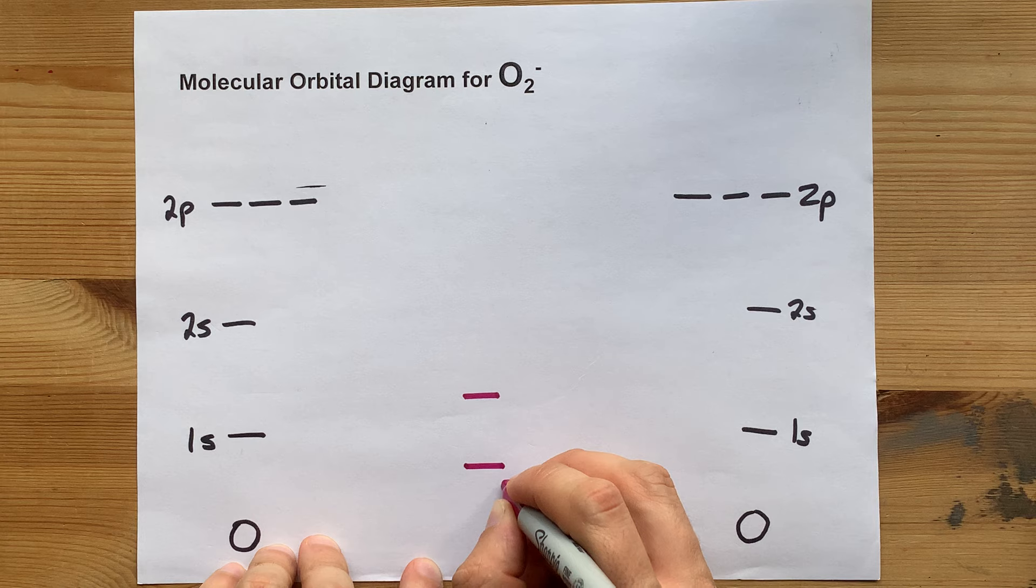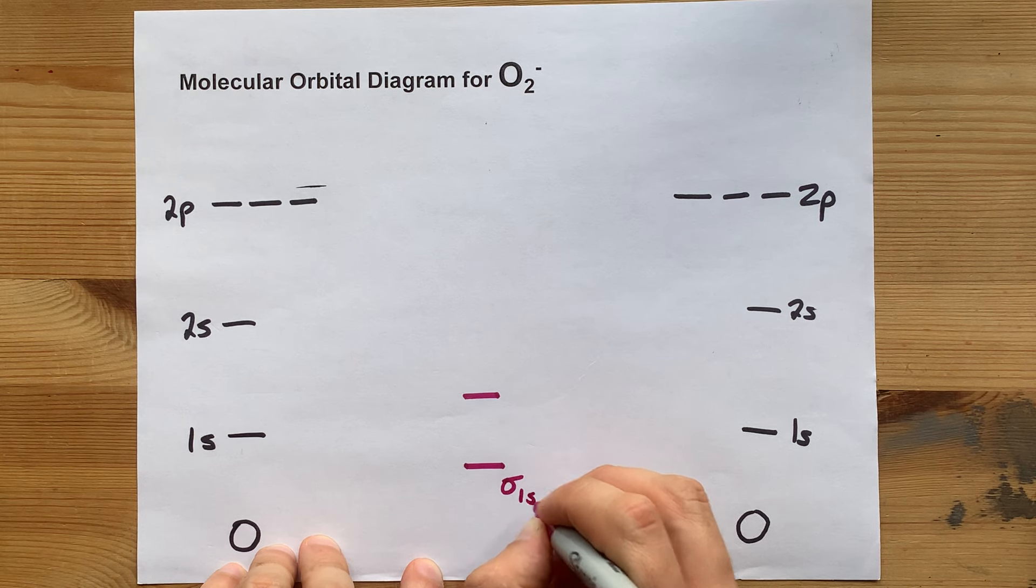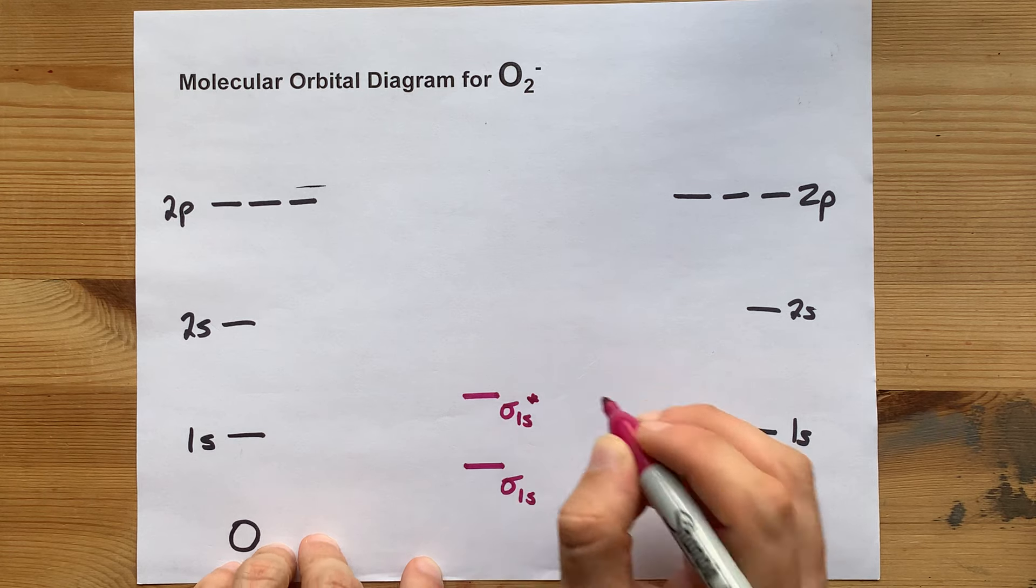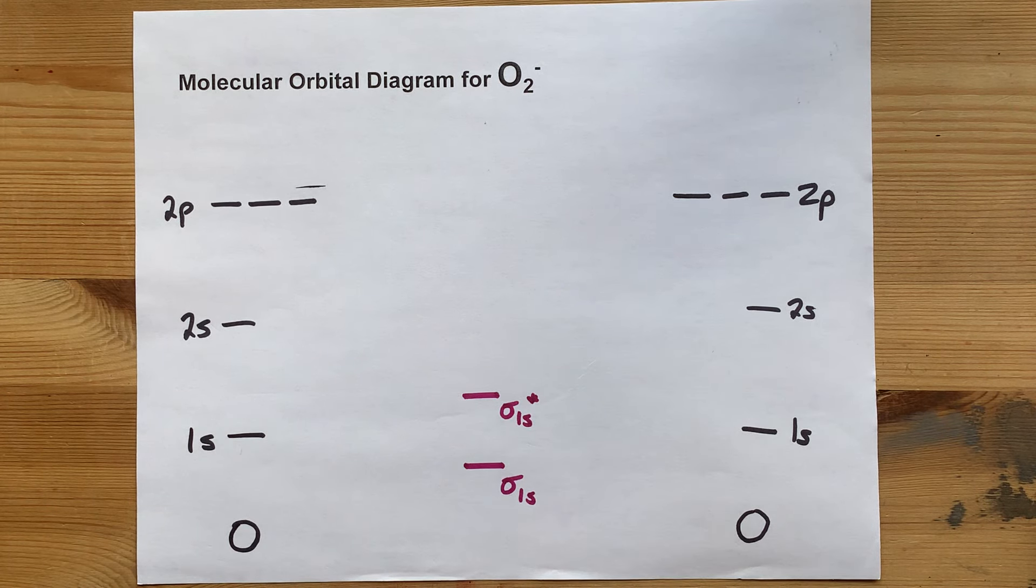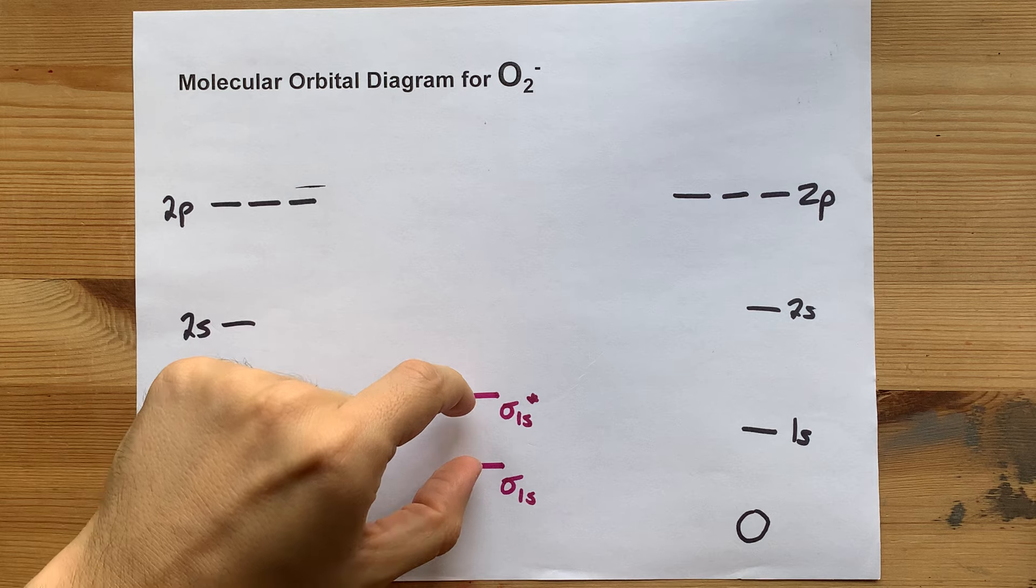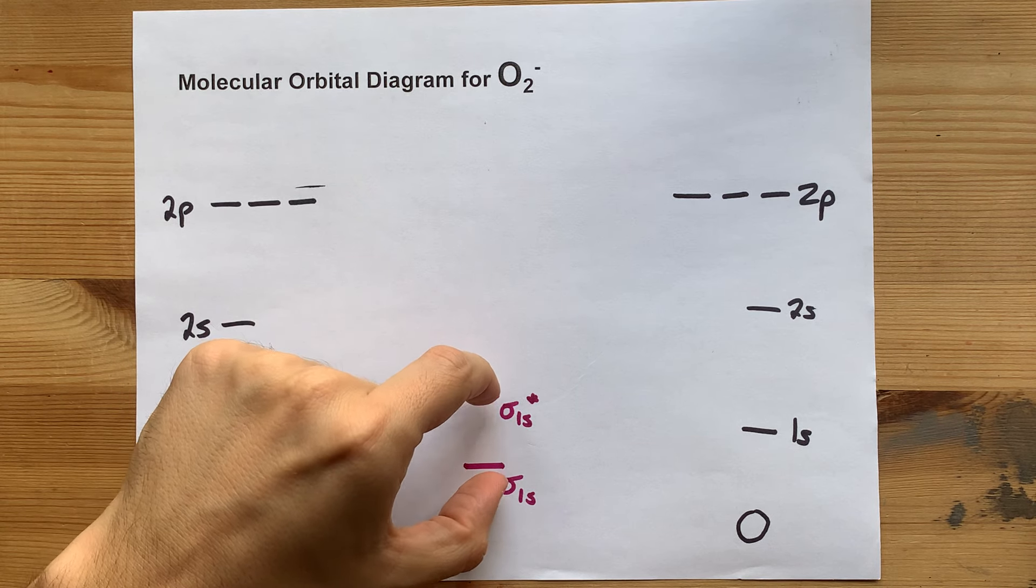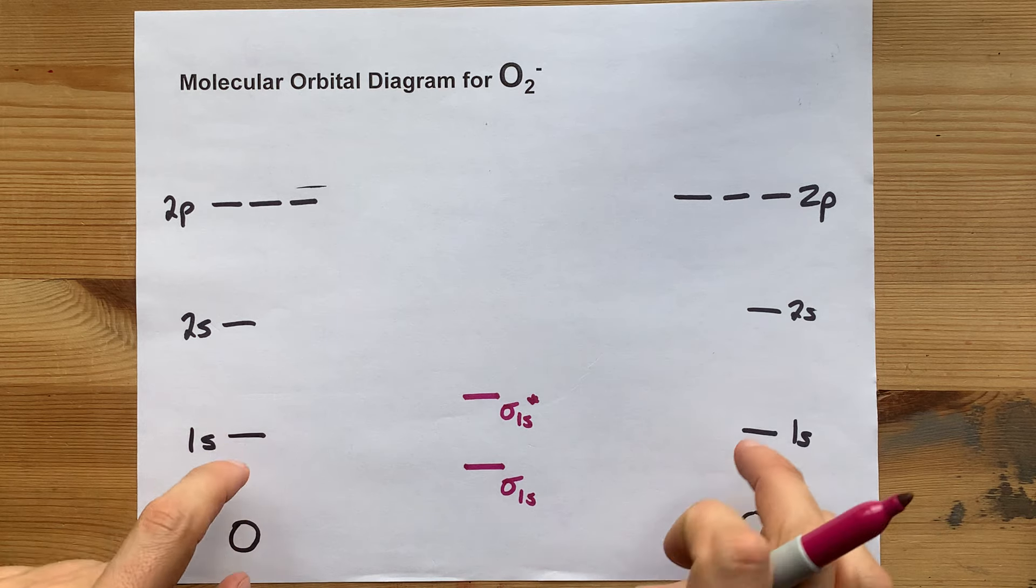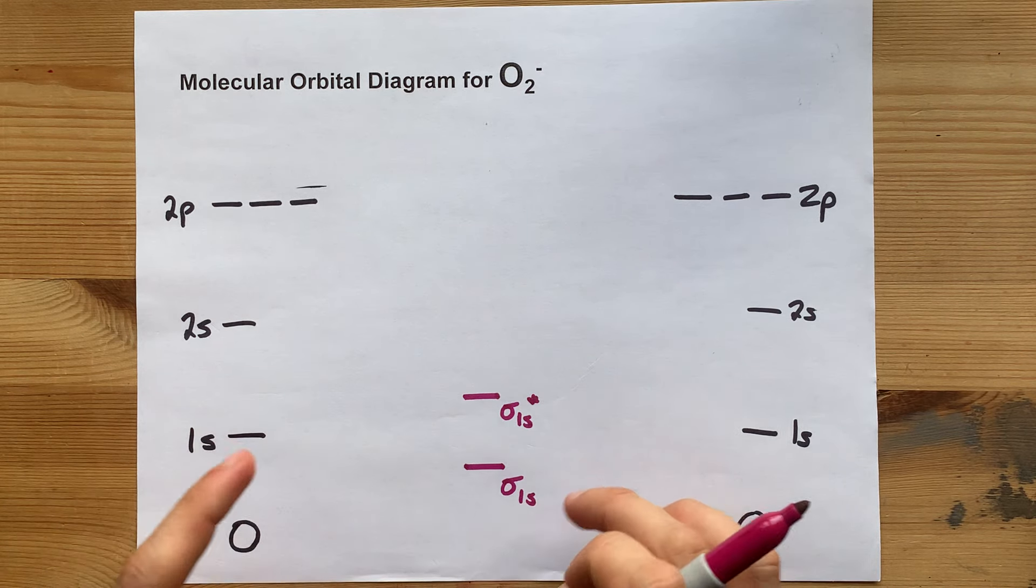The lower energy one is called sigma 1s. The higher energy one is called sigma 1s antibonding, so we put a little asterisk there. These are supposed to be symmetrically spread out relative to where the 1s is. So you haven't created or lost any energy.